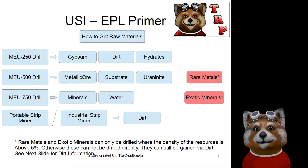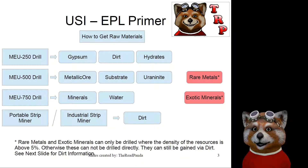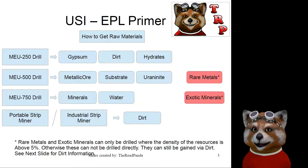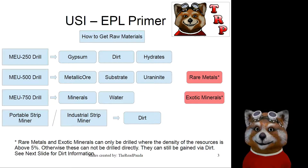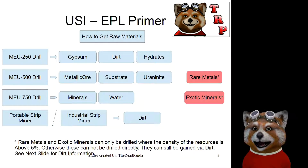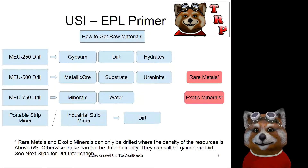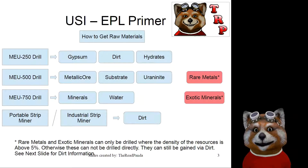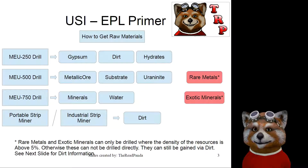The first thing you're going to need to know is how to get the raw materials you need in order to make this work. There are several ways to get raw materials, but the most important ones are simply drilling them. There are several drills that come stock with UKS, and there are basically two types: drills that get you dirt, and drills that get you specific materials.